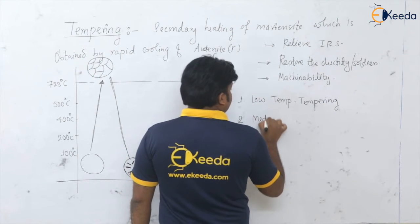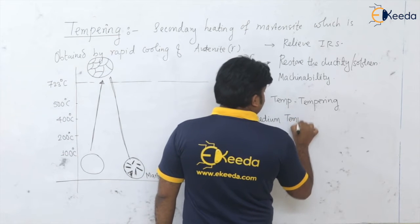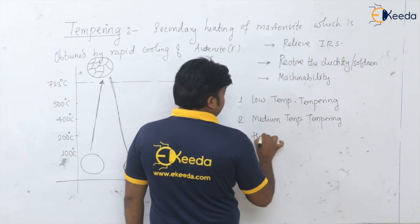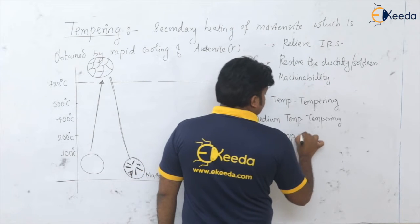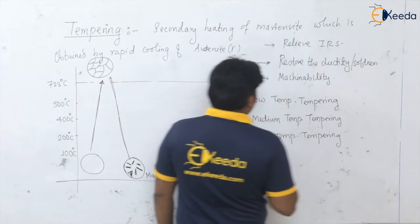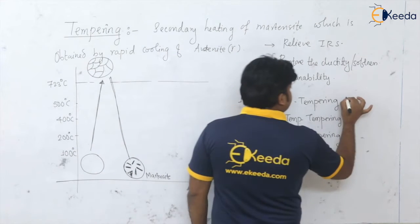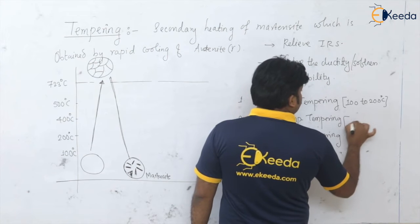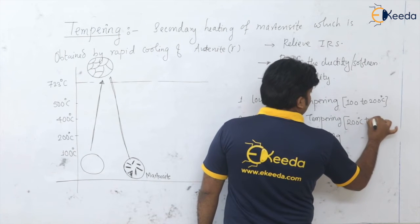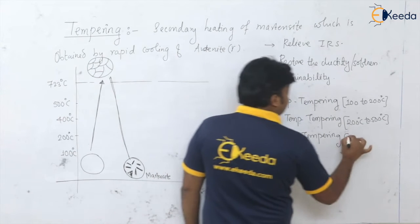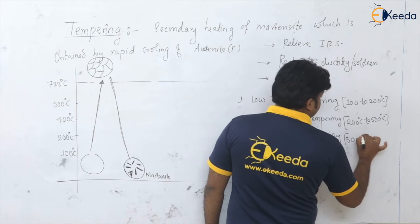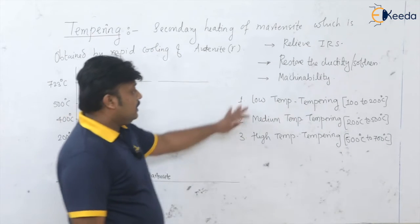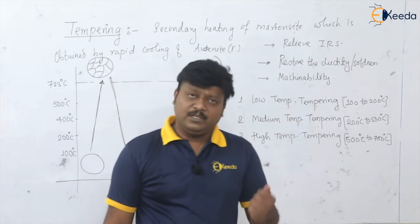The second type is medium temperature tempering, and the third is high temperature tempering. Low temperature tempering involves heating martensite in the range of 100 to 200 degrees centigrade. Medium temperature tempering is from 200 to 500 degrees centigrade. High temperature tempering is from 500 degrees centigrade up to just below the lower critical temperature, that is 700 degrees centigrade.